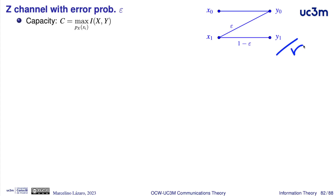Here we have an example of such a channel. The Z channel has two inputs, x0 and x1. With x0, we have a perfect transmission. With x1, we have an error probability of epsilon.